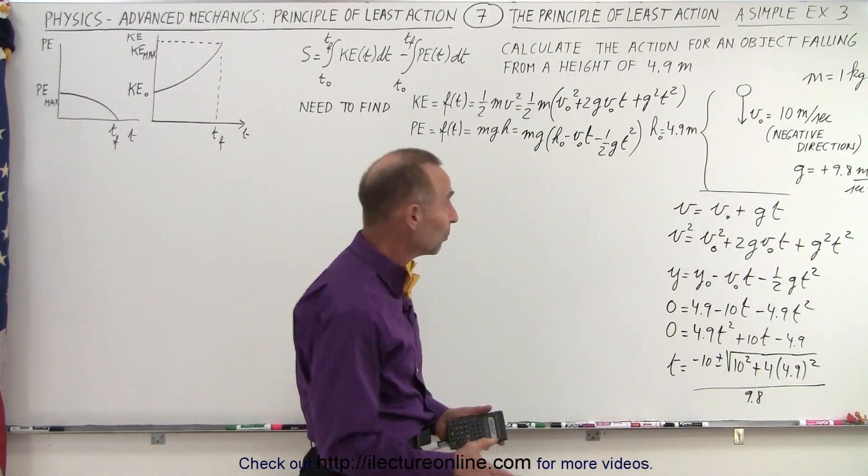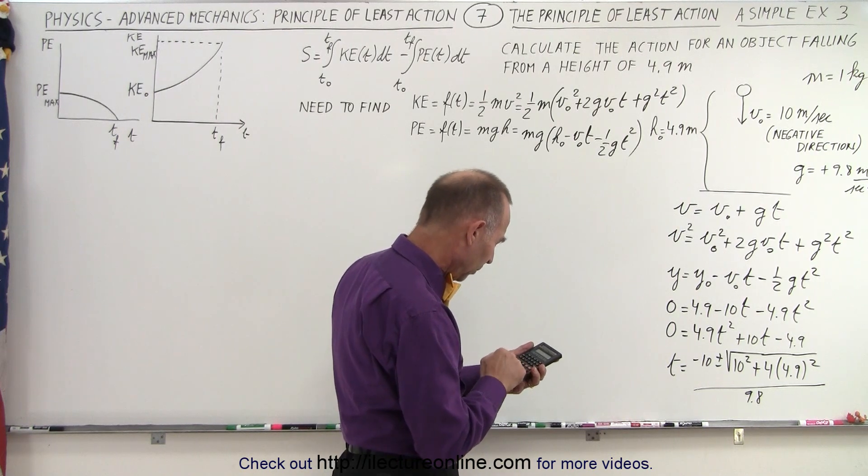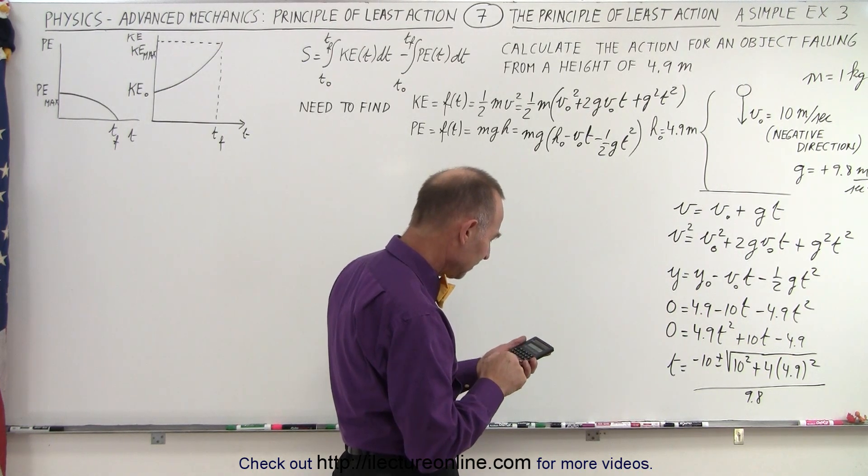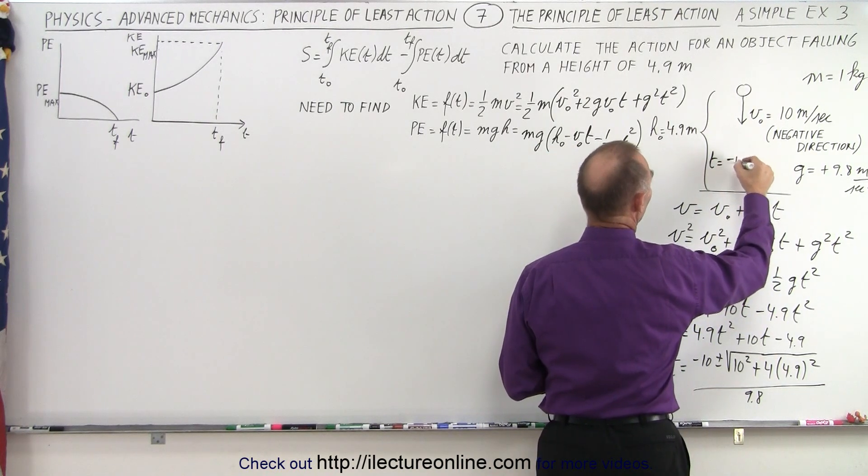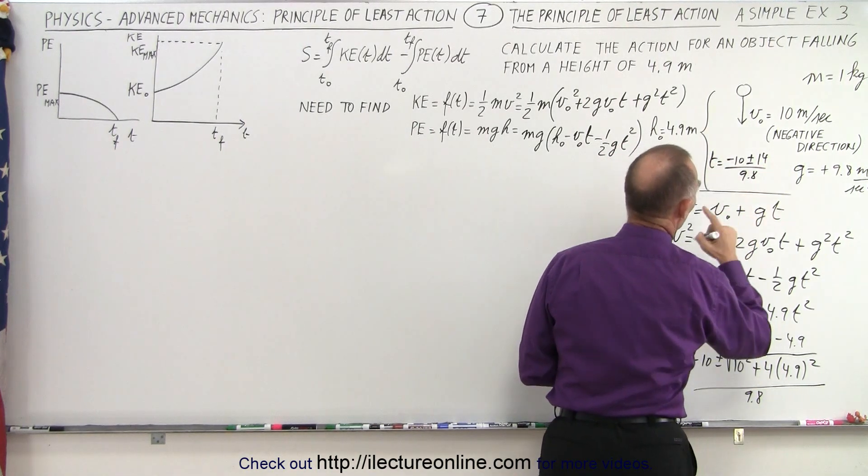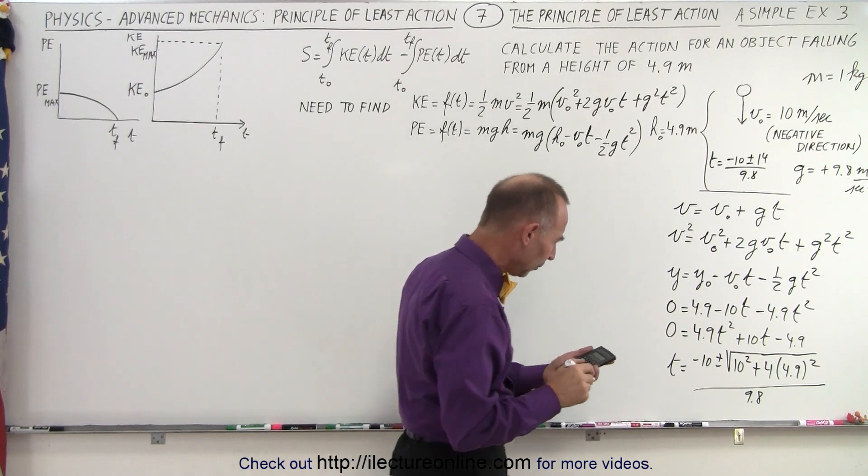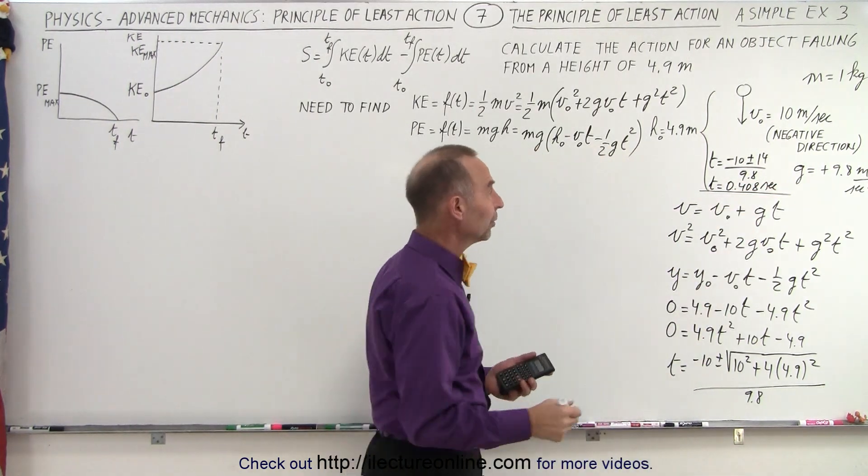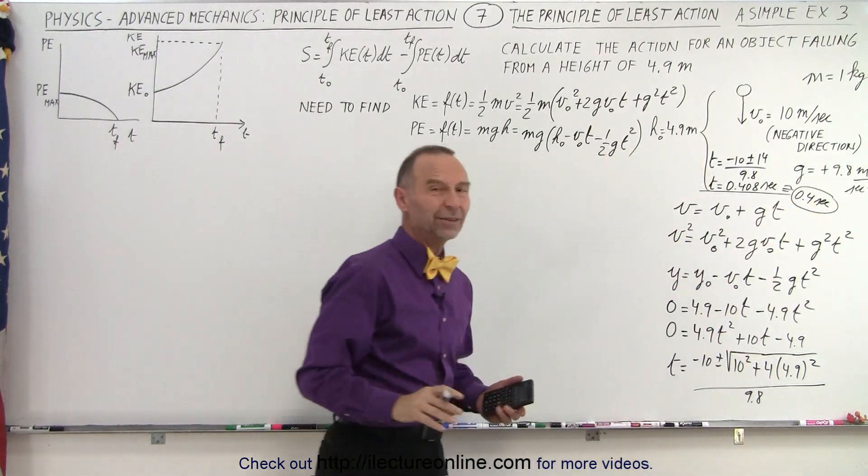All right, so let's find the time in the air, which we're going to need when we integrate over the time interval. So we have 100 plus 4.9 squared times 4 equals, that's 196. So minus 10. The square root of that is 14. So we have t equals minus 10 plus or minus 14, all divided by 9.8. The negative doesn't work, we need positive time. So 4 divided by 9.8 equals 0.408 seconds. So time equals 0.408 seconds, the time that it takes for the object to go down. Let's just simply simplify it to about 0.4 seconds for the time for it to come down to make things a little bit easier to work with.